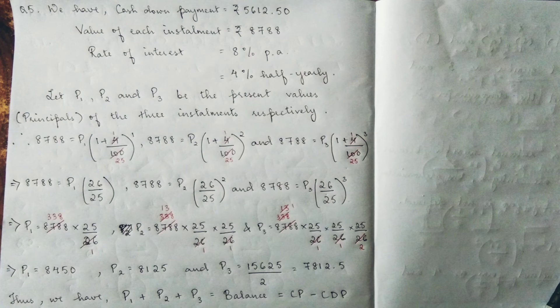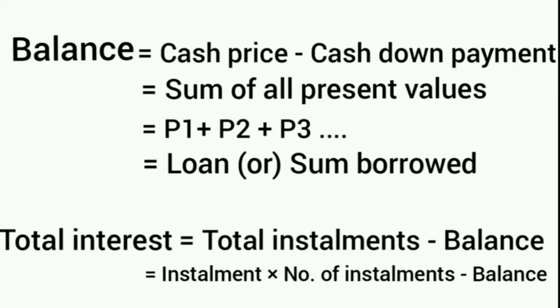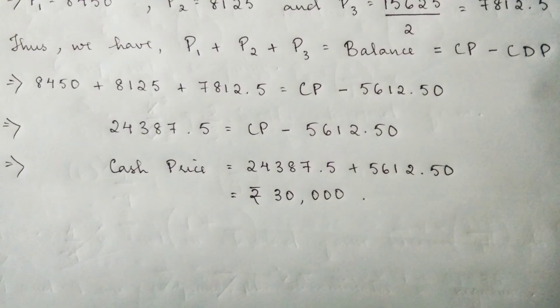Using the cash price formula, the balance equals the sum of present values P1 plus P2 plus P3, which equals cash price minus cash down payment. So we get cash price is rupees 30,000.